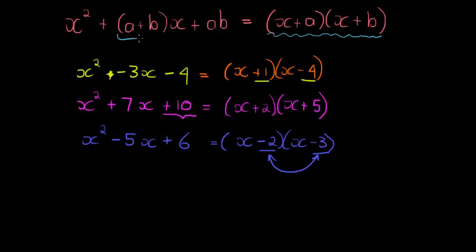the middle term, the x term, the one with just an x, I get by adding these two numbers, a and b. And the constant term, that's the term without any x, I get by multiplying those two numbers. And we looked at a few examples and here they are.